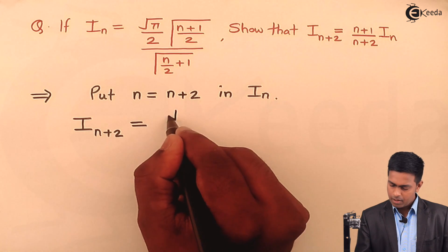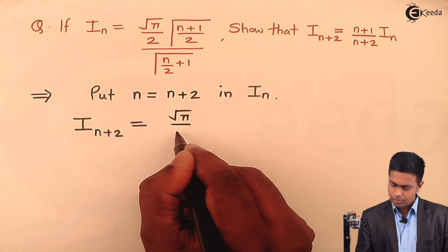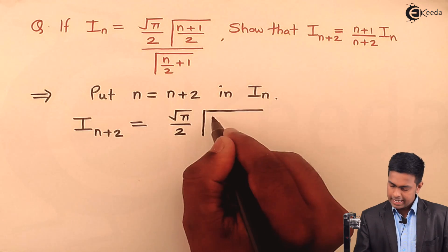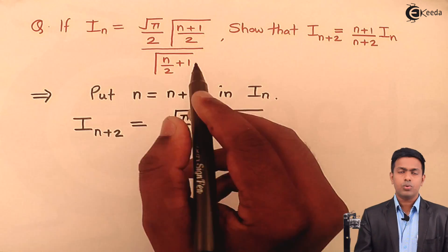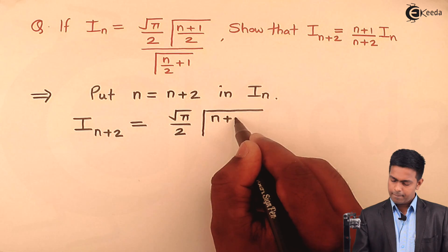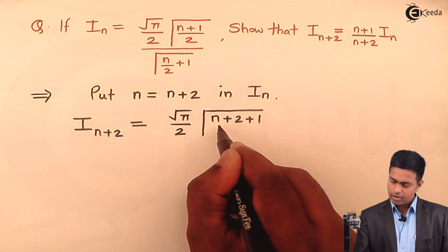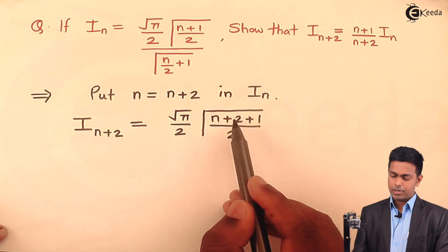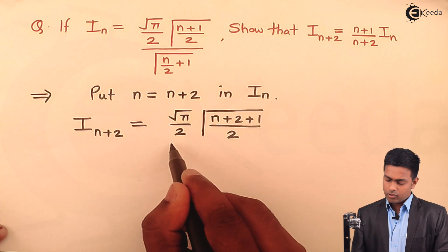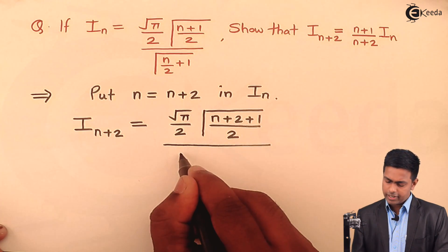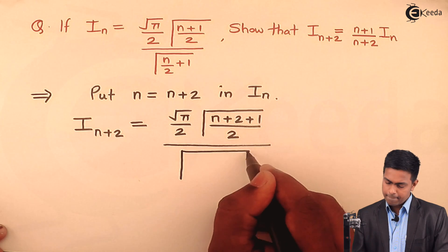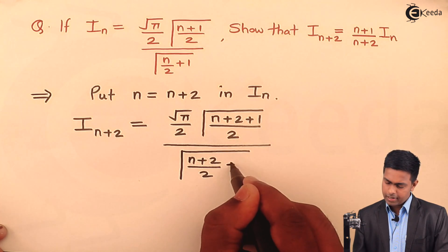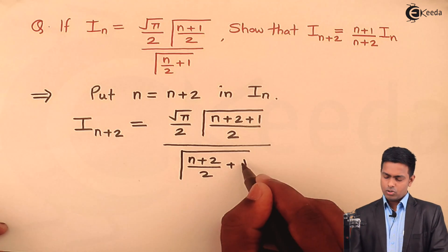So putting n = n+2 in I(n), this gives us I(n+2) = √π/2 · Γ((n+2+1)/2) / Γ((n+2)/2 + 1), where I have replaced n with n+2 in both the numerator and denominator.